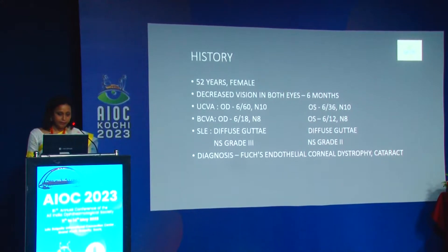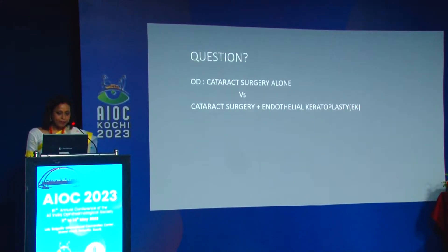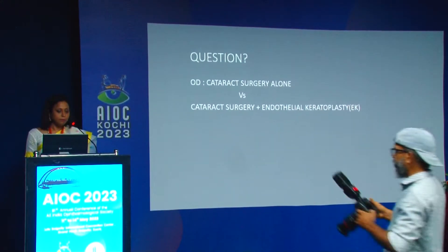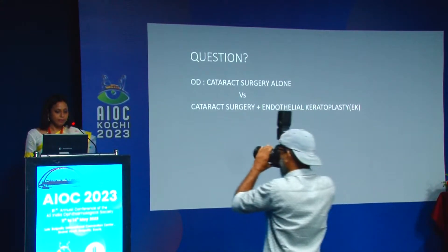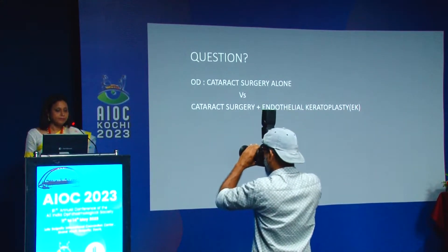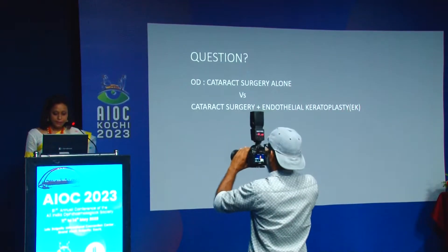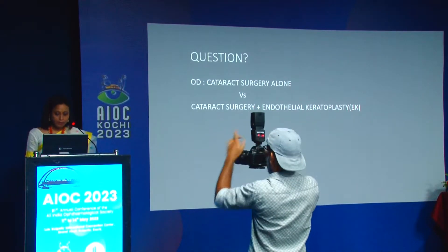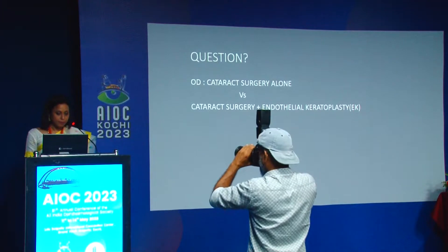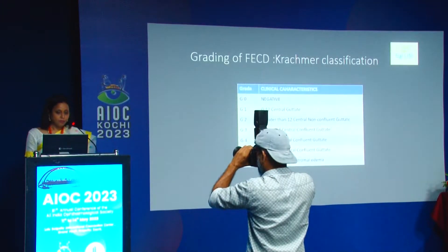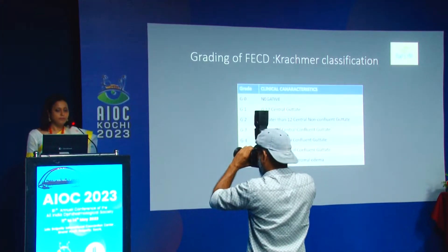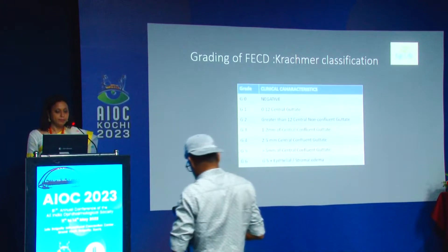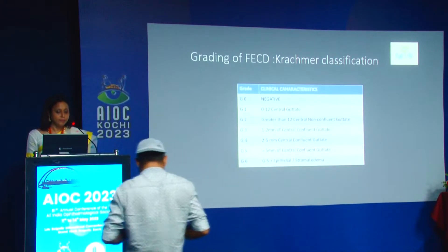The diagnosis was Fuchs endothelial corneal dystrophy with cataract. The big question one faces is whether to do cataract surgery alone or a combined cataract surgery with endothelial keratoplasty. Starting with Fuchs dystrophy, as described by Krachmer, it has been graded from grade 0 (no disease) to grade 5 to grade 6.